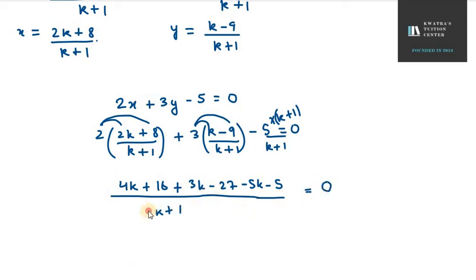Now, this is k plus 1. If we take the right hand side, it will be 0 only. So you are left with the numerator part only.